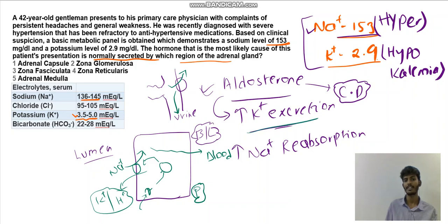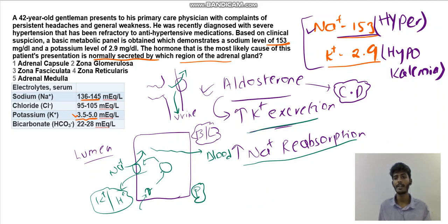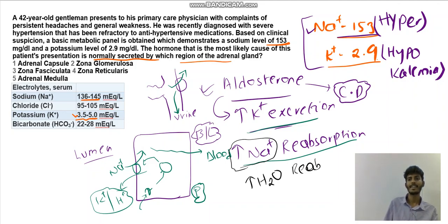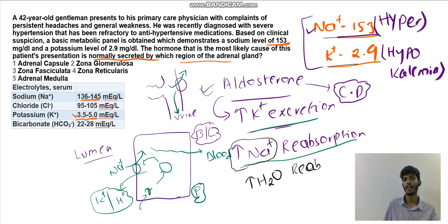Aldosterone causes increased potassium excretion and increased sodium reabsorption. What is the relationship between sodium reabsorption and hypertension? The golden rule of the kidney is: wherever sodium goes, water follows. So sodium goes into the blood and water follows, increasing blood volume. More blood volume leads to elevated blood pressure. This explains the hypertension with hypernatremia and hypokalemia that is not responsive to antihypertensive drugs.